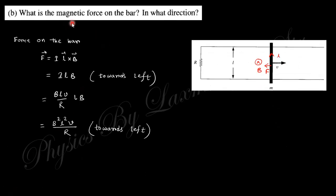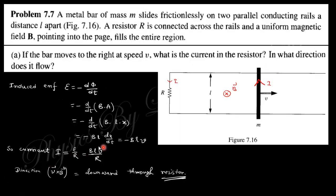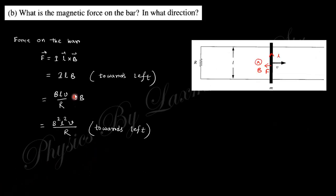Next: what is the magnetic force on this bar? The magnetic force is F = IL×B. This is I, this length is L, and B is also B; they are perpendicular to each other. L×B gives this force along that direction, towards the left. Putting the value of I = BLV/R, you get F = B²L²V/R. This is the force on this rod.